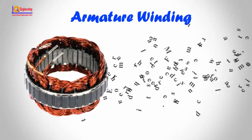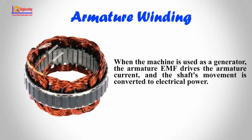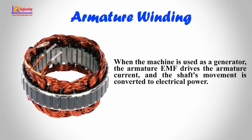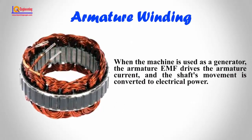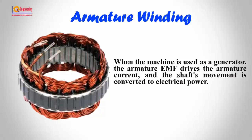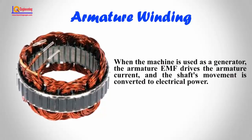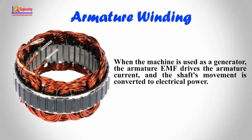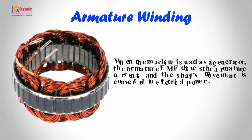When the machine is used as a generator, the armature EMF drives the armature current, and the shaft's movement is converted to electrical power.